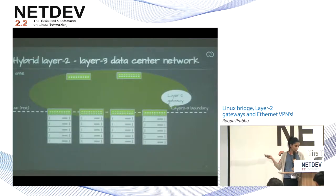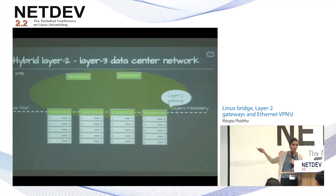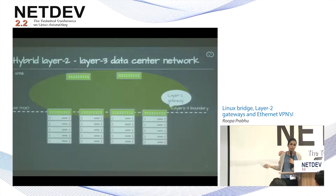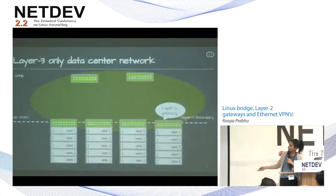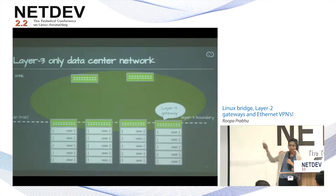In hybrid models, the servers are all running layer two VLANs and they use the TOR as a gateway to the layer three network. From the TOR and above, you're basically running routing daemons like BGP, and it's all layer three. In a layer three only data center, you're doing routing everywhere, there's no VLANs — you're running L3 from the hypervisor or servers up to spine and the whole data center.